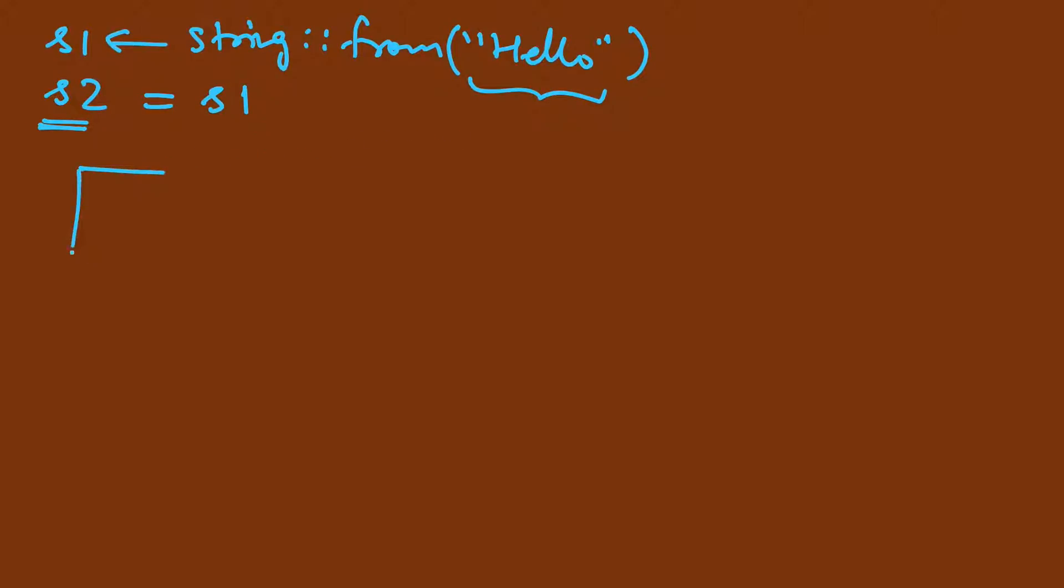Initially s1 had a pointer, then the length 5 and capacity 5, and this pointer was pointing to a memory in heap which was holding the word hello.